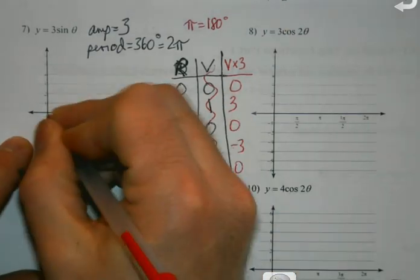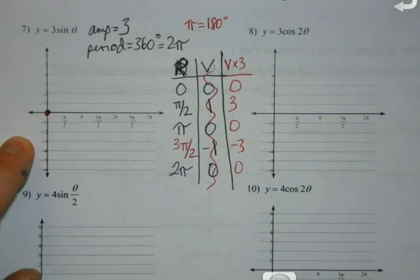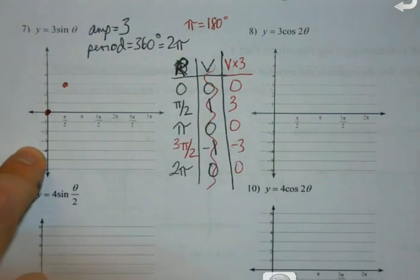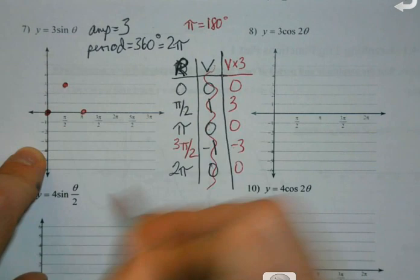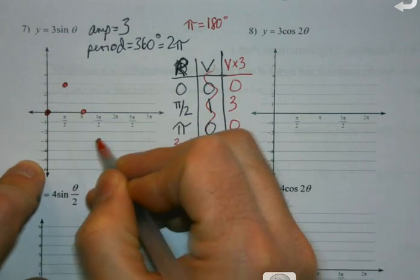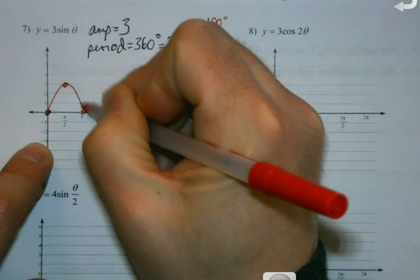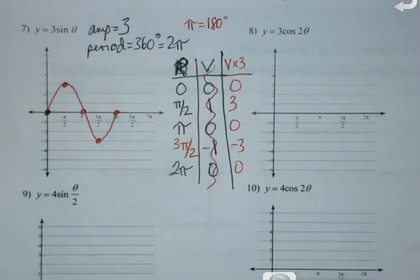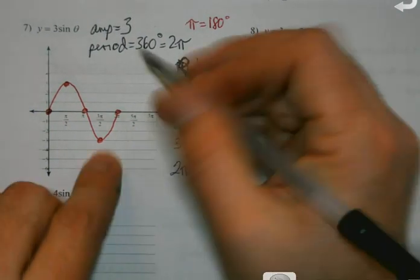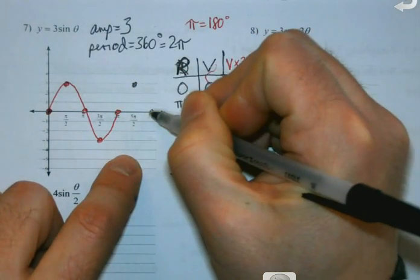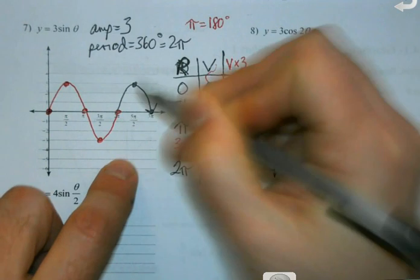So then I start going, okay, so 0, 0. Pi over 2 is 3. Pi is 0. 3 pi over 2 is negative 3. And 2 pi is back to 0. And again, unless you're told otherwise, I don't mind if you stop at one period. But it really wouldn't be that hard to keep going with this, because you're like, oh, it just keeps every single value, it just keeps going back up, back down, and I could actually keep the curve going if I wanted to.